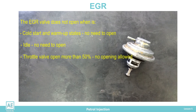When the throttle is more than 50 percent open, the EGR valve does not open — even though the higher combustion temperature increases nitrogen oxide concentration — because engine operation would be impaired. Similarly, during acceleration, full engine power is required for safety. In this mode the engine runs for a short time and the increase in nitrogen oxide concentration is negligible.